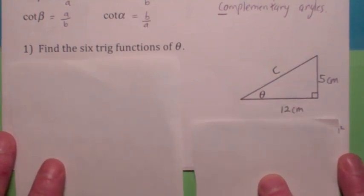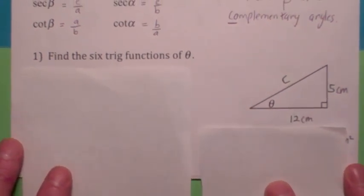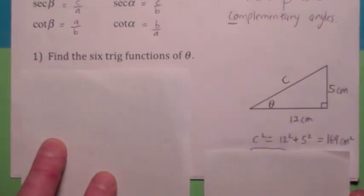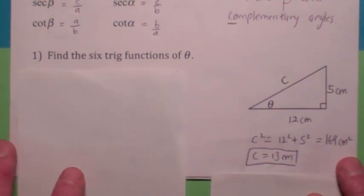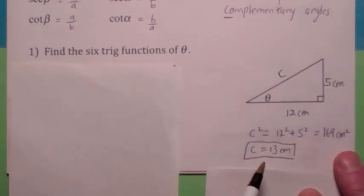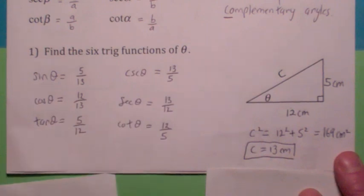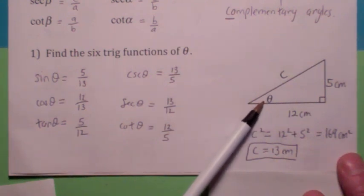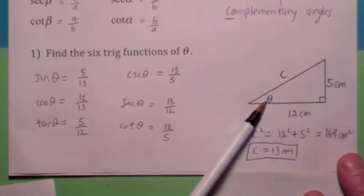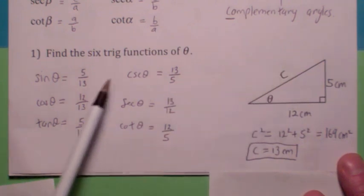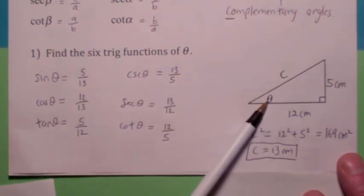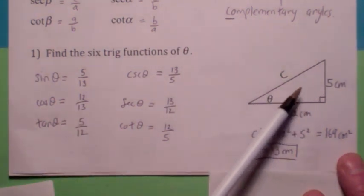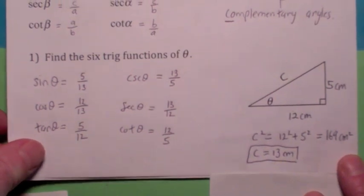Suppose I give you a triangle — it's a right triangle, very important that it's a right triangle — and this leg is 12, this leg is 5, and I want you to find the six trig functions of theta. Before you can do that, you need to know all the sides, so you find c by the Pythagorean Theorem — c turns out to be 13. Once you do that, you can find all the trig functions. Sine of theta is opposite over hypotenuse: 5 over 13. Cosine of theta is adjacent over hypotenuse: 12 over 13. Tangent of theta is opposite over adjacent: 5 over 12. The other three are just the reciprocals.